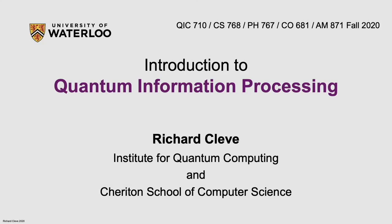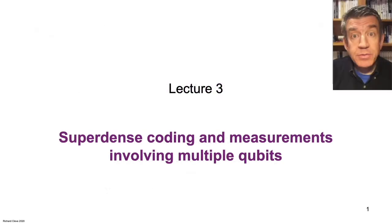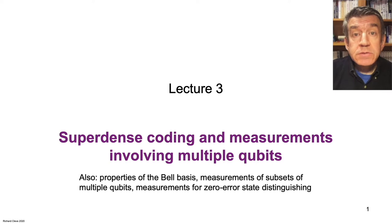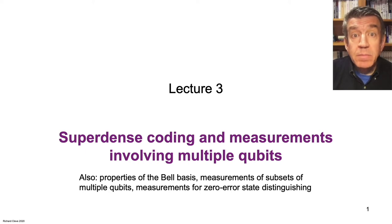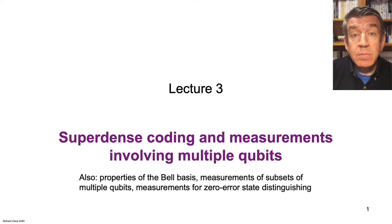Welcome to Lecture 3 of Introduction to Quantum Information Processing, which is about superdense coding and measurements involving multiple qubits. Interesting properties of the so-called Bell basis will come up here, and in addition to measurements with respect to the Bell basis, we will see some other kinds of measurements, including measurements of subsets of qubits. Finally, we will see some exotic measurements that can distinguish between non-orthogonal states in a novel way.